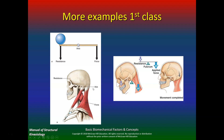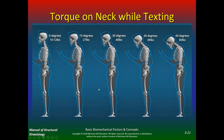When texting with your head forward, if you're straight at zero degrees you put about 10 to 12 pounds of torque on the neck — that's normal, about how much your head weighs. Just leaning forward 15 degrees puts 27 pounds of torque. At 30 degrees, you put 40 pounds of torque. Most people are at 45 to 60 degrees, putting almost 50 to 60 pounds of extra torque on the upper traps, sternocleidomastoid, scalenes, rhomboids, and levator scapulae. No wonder your neck hurts and you have headaches.